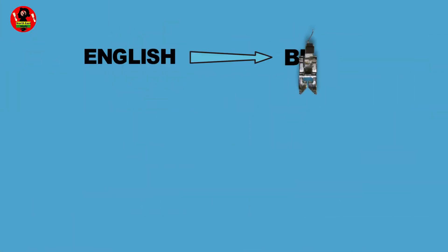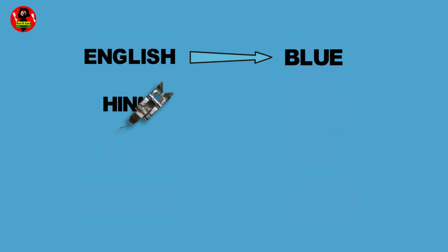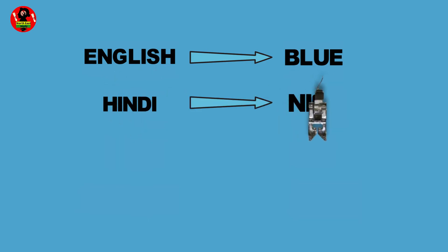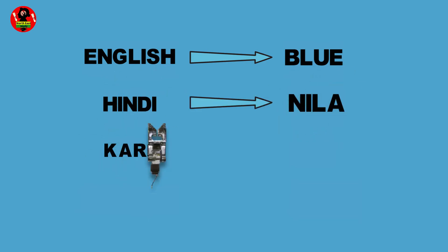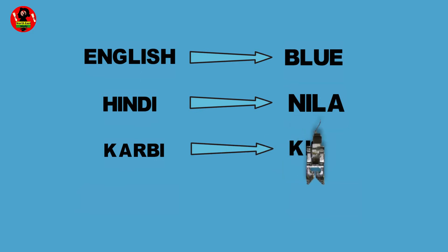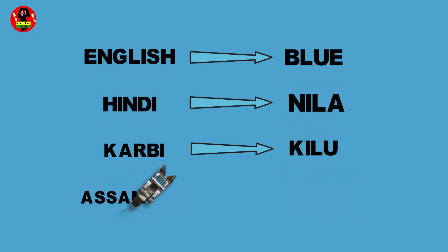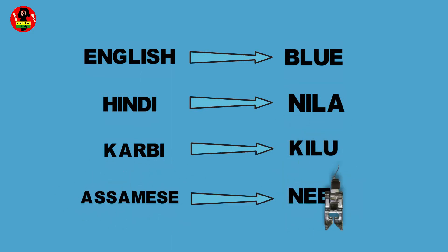English: Blue. Hindi: Nila. Karbi: Kiliru. Assamese: Nila.